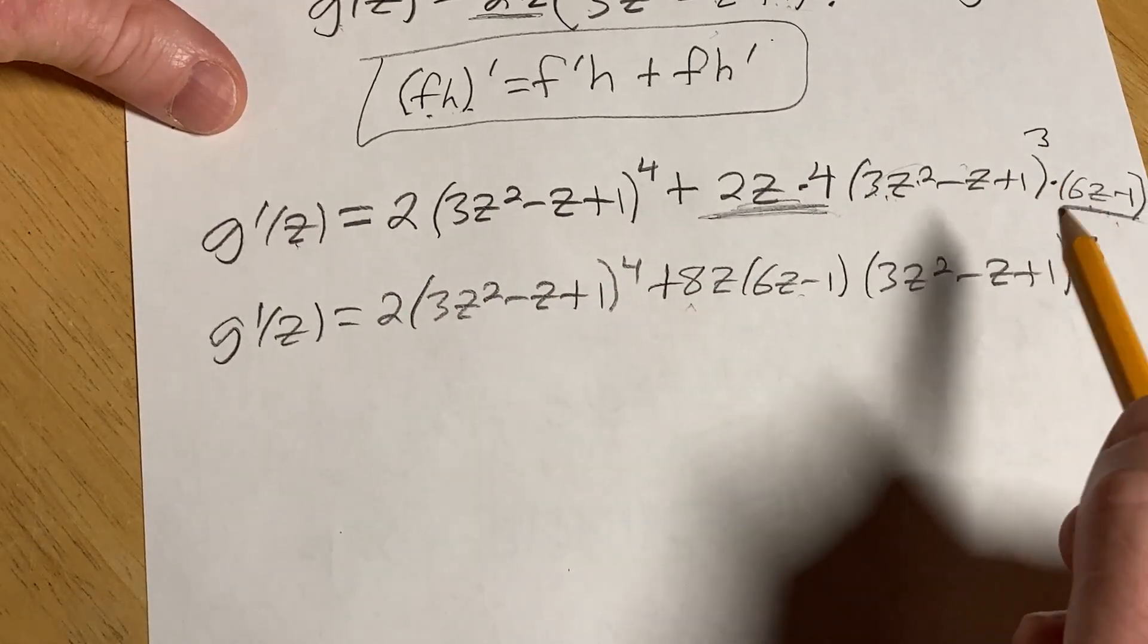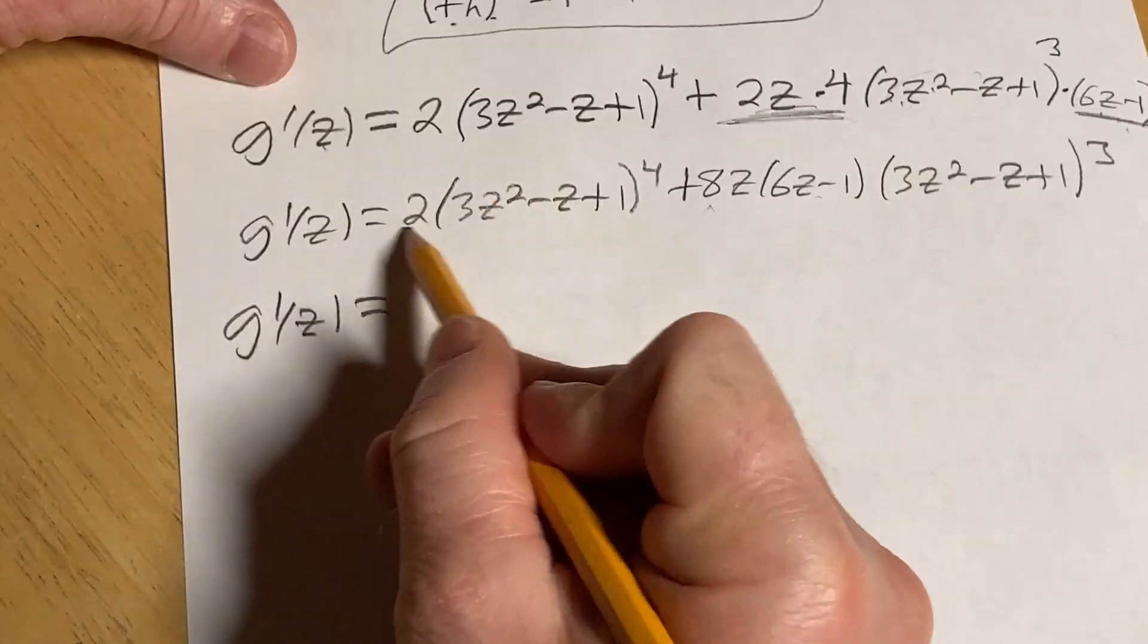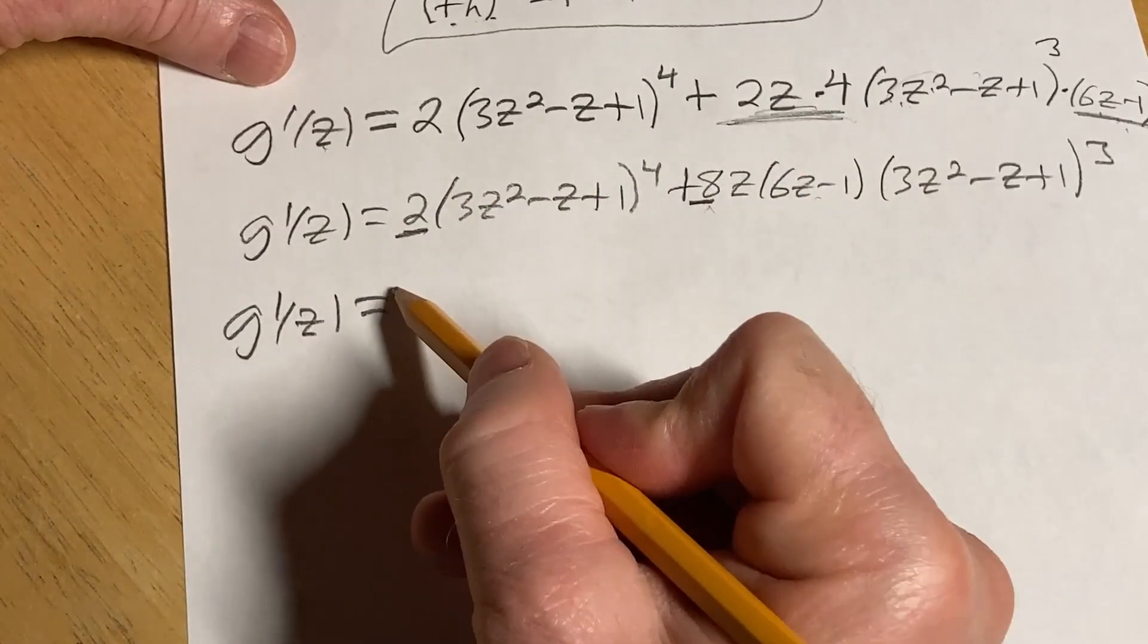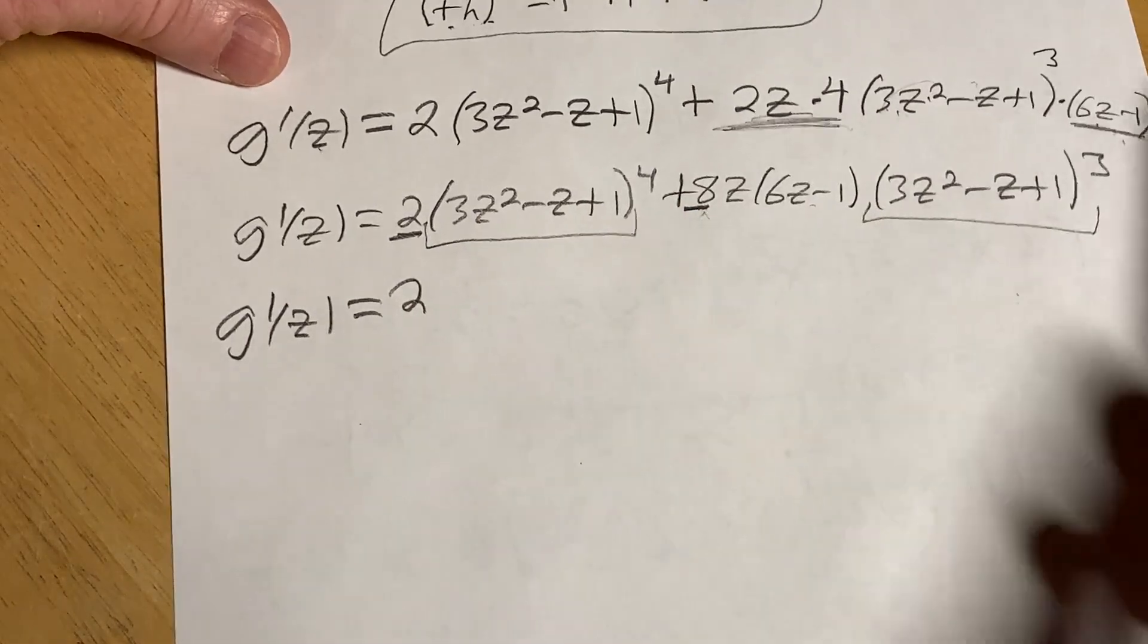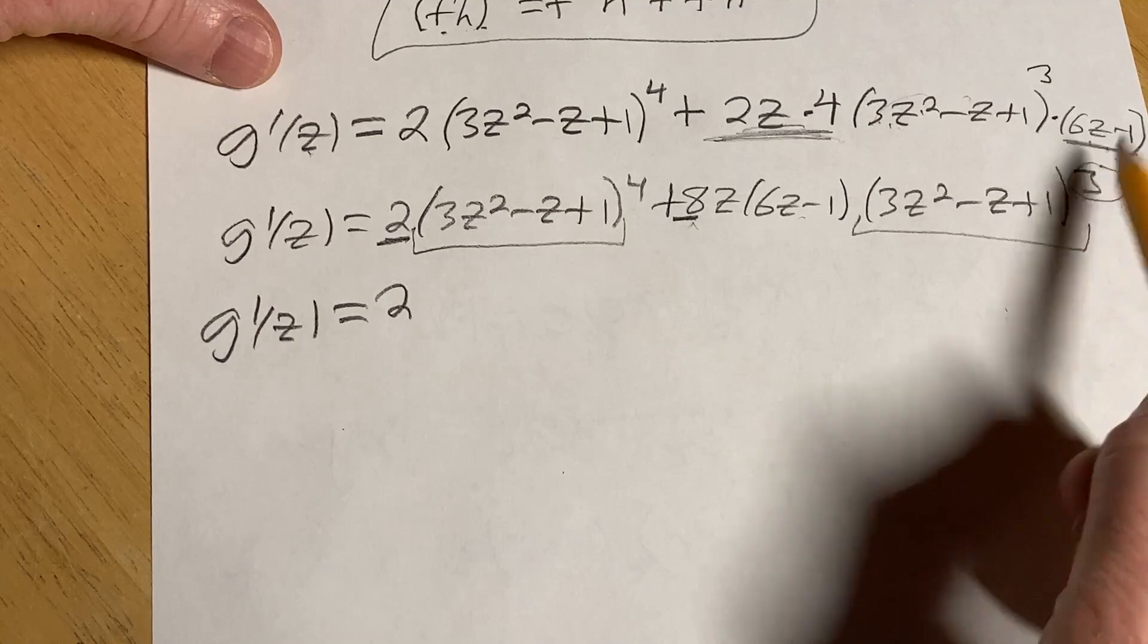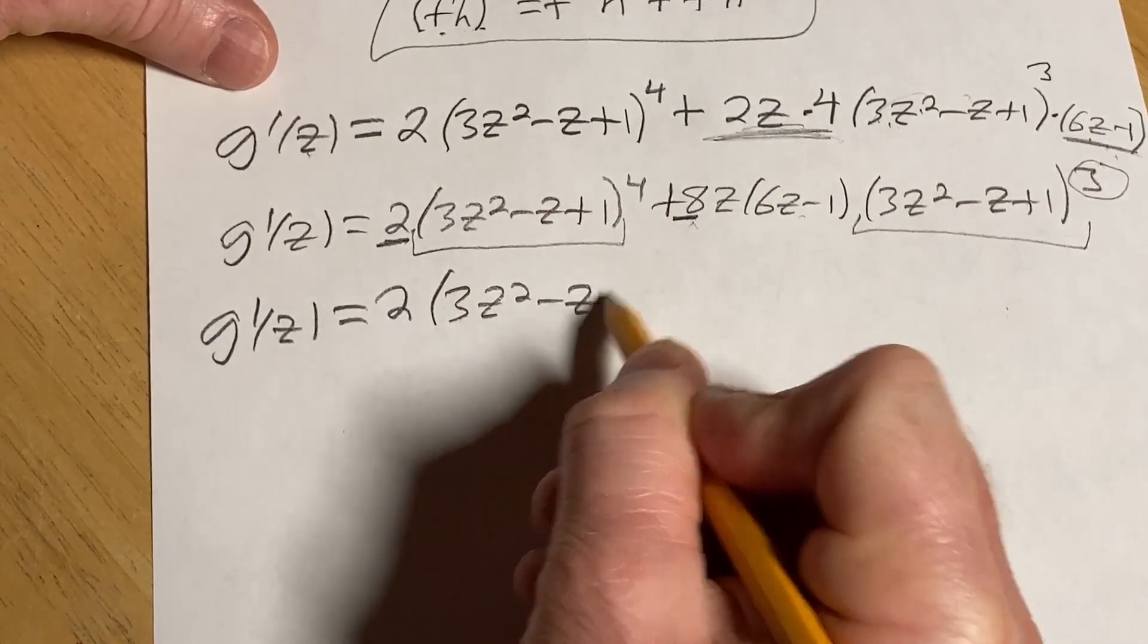So now I think we're in a better place where we can factor. So the 2 and the 8 have a common factor of 2. And then we want to factor out one of these. So we choose the one that has the smaller exponent always. So this will be 3z squared minus z plus 1.